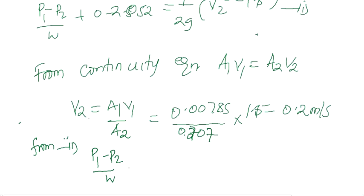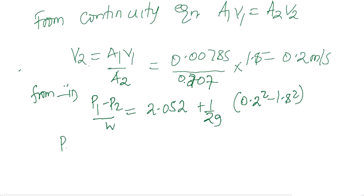Therefore, P1 minus P2 out of specific weight equals 2.052 plus 1 over 2g into 0.2 squared minus 1.8 squared.